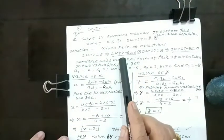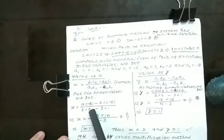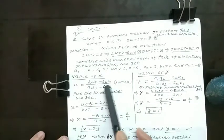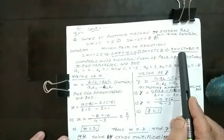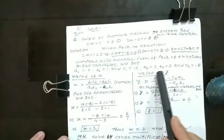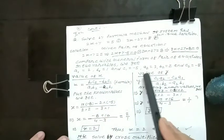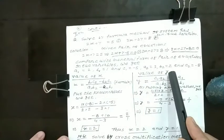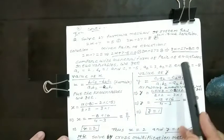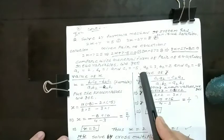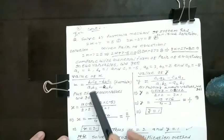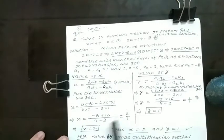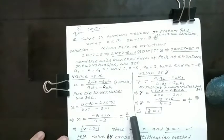1 into minus 8, minus b2c1. What is b2? 2. And c1? Minus 5. Put all these values in the formula: we get minus 8 plus 10 upon 4 minus 3 equals 2 upon 1. X is equal to 2.